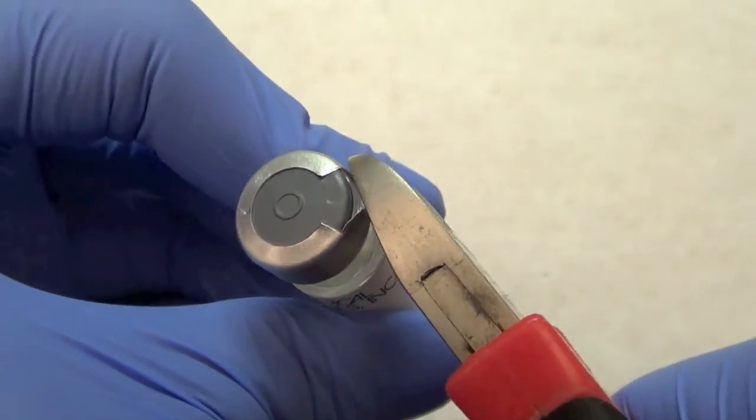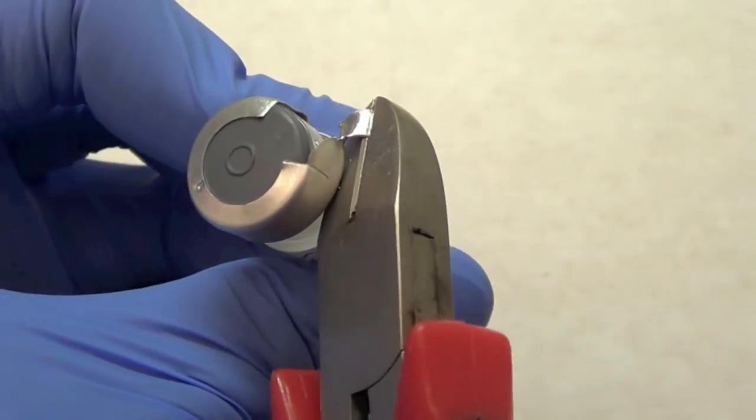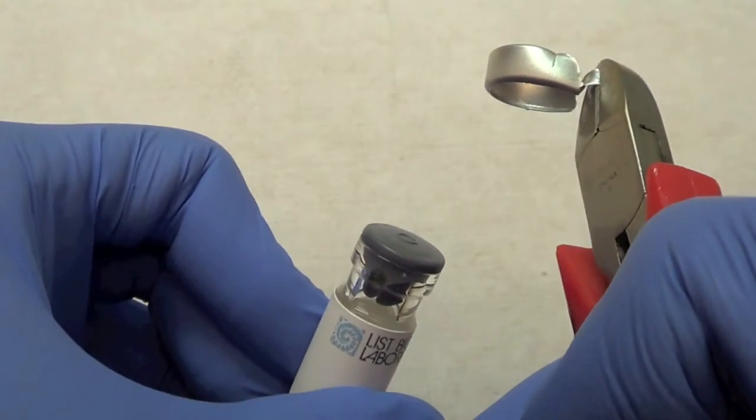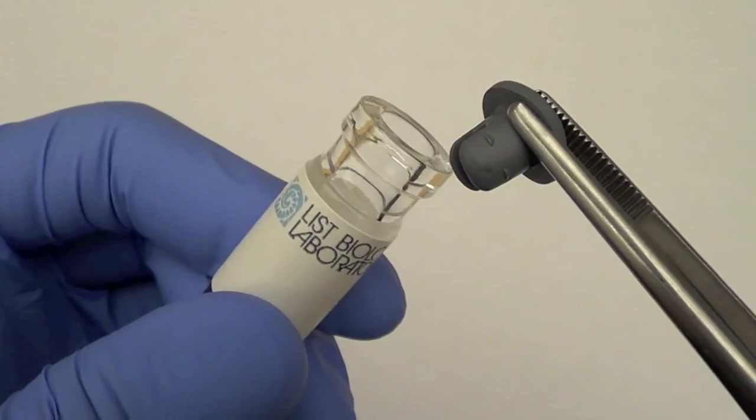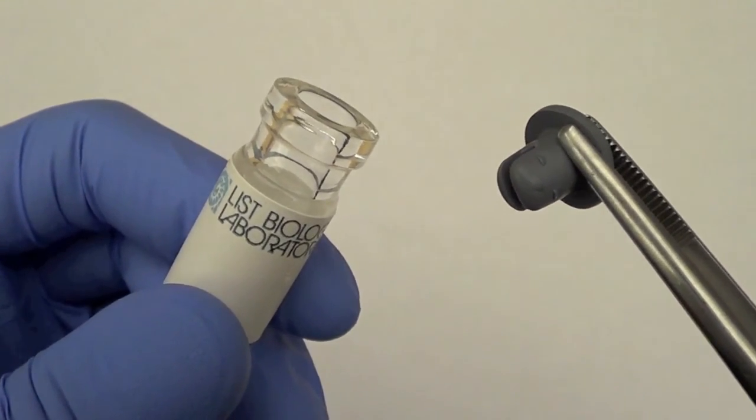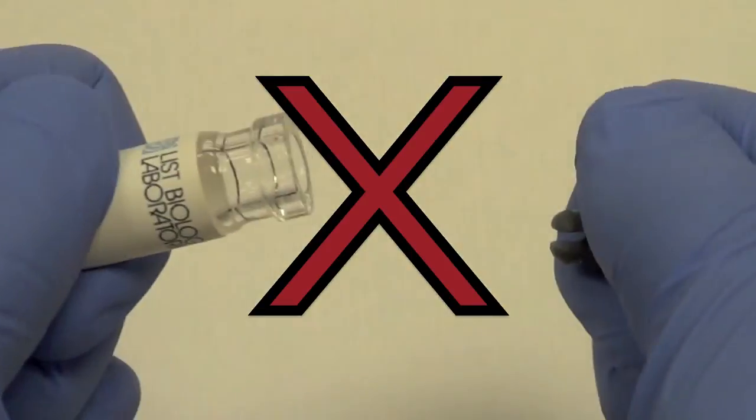Gently continue pulling the tab until the crimped metal seal is broken. Remove the metal seal. Use forceps or equivalent tools to slowly and gently lift and remove the rubber cap. Please don't use your fingers or any excessive force.